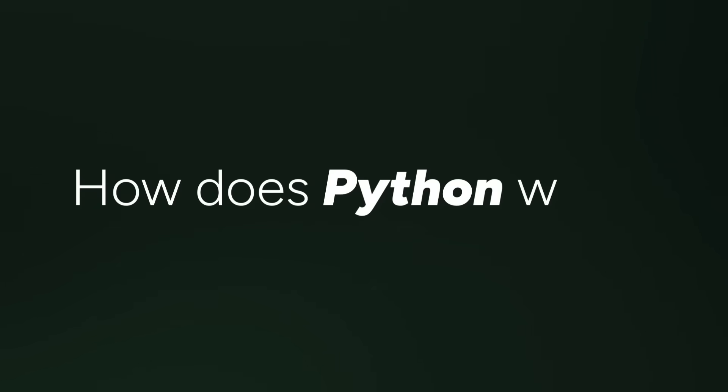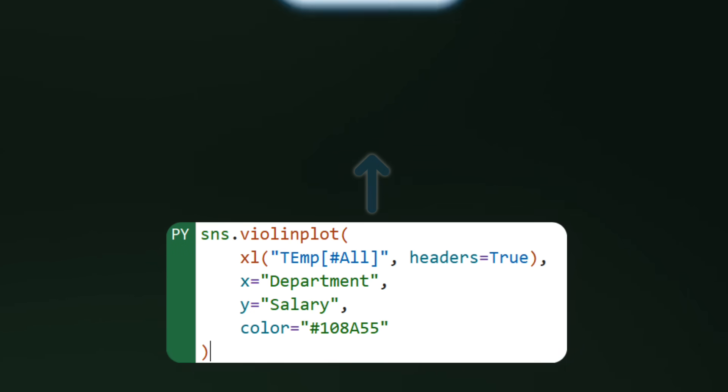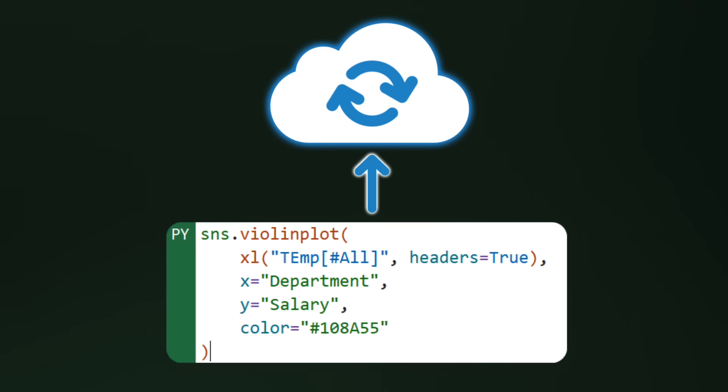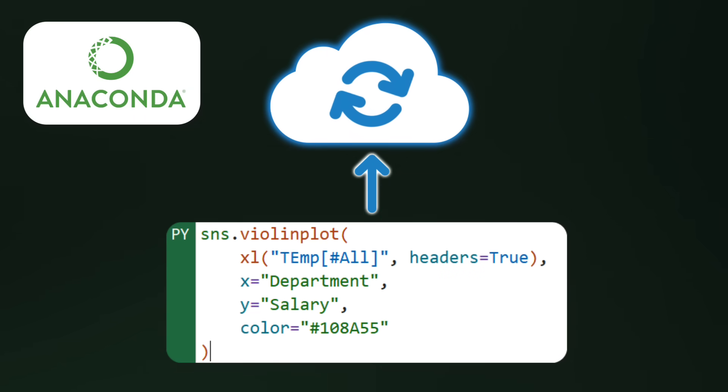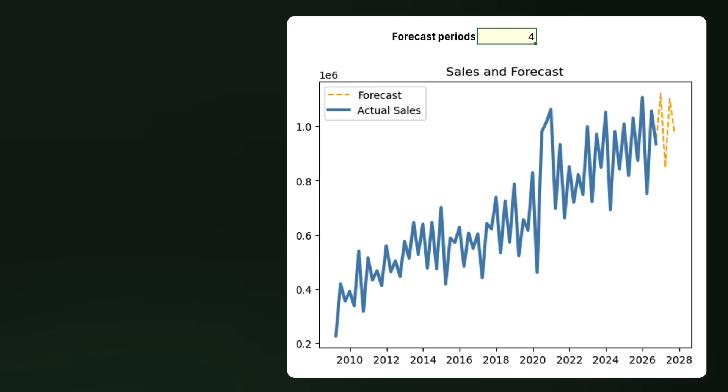There might be a side effect that happened to me — you might end up loving Python and unwillingly end up with a new valuable skill. So how does Python actually work in Excel? When you enter a Python formula, Excel sends that code to the cloud, specifically to a secure server hosted by Microsoft in partnership with Anaconda. That's why you don't need to install Python — you're using Microsoft's version. Since this is built for data analysis, you can't use it to generate files or control other apps.